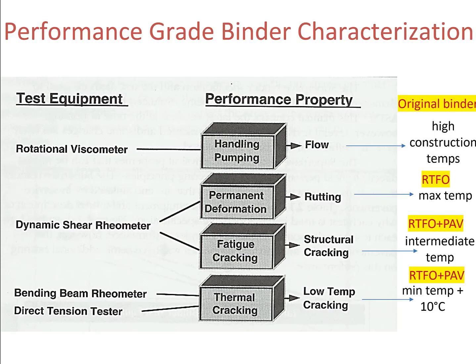The dynamic shear rheometer test is performed to check two things: one is the rutting potential of the asphalt binder, and the other is the fatigue potential of the asphalt binder. Rutting, which is permanent deformation, often happens early in the pavement life, and fatigue cracking often happens later in the pavement life.